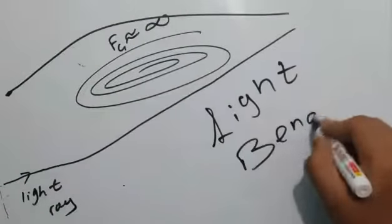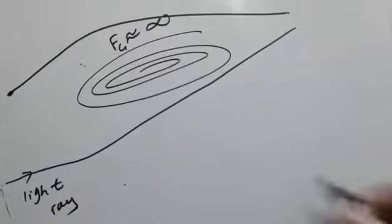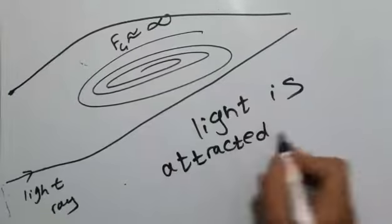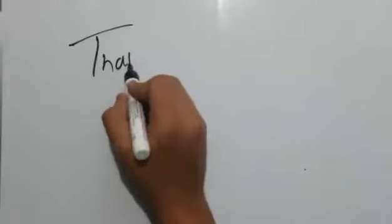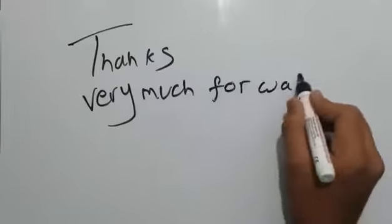And that's how we can say light bends. This is how it works and thus we can say light is attracted towards a very strong gravity or infinitely strong gravity. So guys, thank you very much for watching this video.